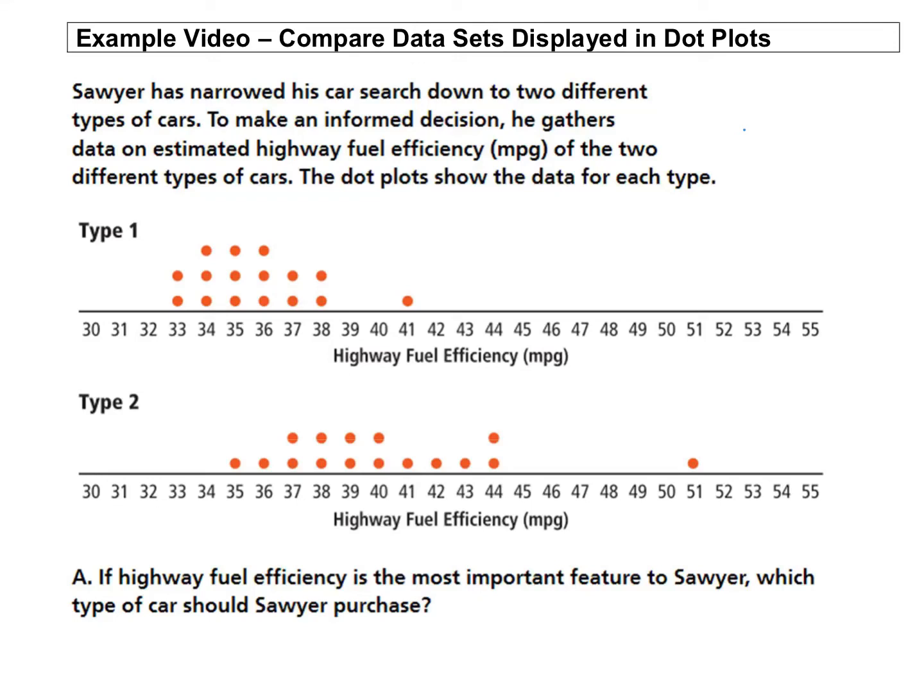All right, in our first example, we're going to compare data sets displayed in dot plots. In our example, Sawyer has narrowed his car search down to two different types of cars. To make an informed decision, he gathers data on estimated highway fuel efficiency in miles per gallon of the two different types of cars.